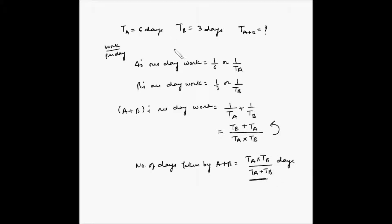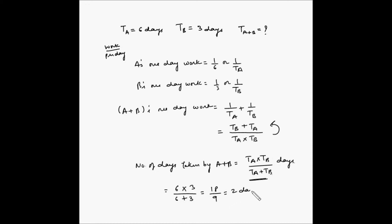Using this formula with our values: the number of days taken by A and B together equals Ta (6 days) multiplied by Tb (3 days), divided by Ta + Tb (6 + 3 = 9). Six times three is 18, divided by 9 equals 2 days. So if you have these numbers, you can directly use the formula Ta×Tb divided by (Ta+Tb) to arrive at the solution.